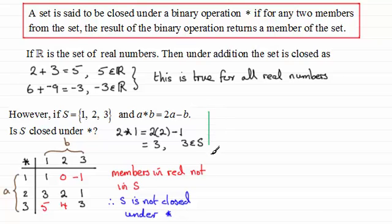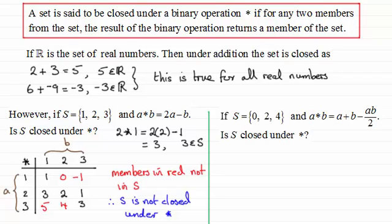Now I've got another example here that I would encourage you to have a go. If S is the set of elements 0, 2, 4, and A star B is defined as A plus B minus AB all over 2, is S closed under the operation star? So give you a moment just to have a go of this. I would suggest you draw up a table similar to what I've just done on the left here.